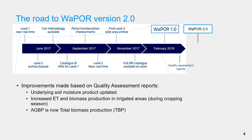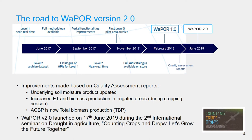Some key improvements made to the database include improvements to the soil moisture product, which resulted in increased ET and biomass production in irrigated areas. Another update was that version 1 used a fixed above-ground over total biomass fraction for all land use classes, whereas version 2 now uses total biomass production including underground. WAPOR version 2 was officially launched on the 17th of June 2019 during the International Seminar on Drought in Agriculture in Rome.